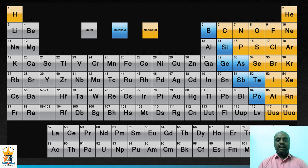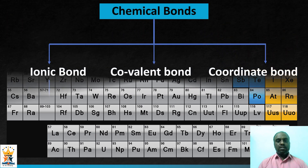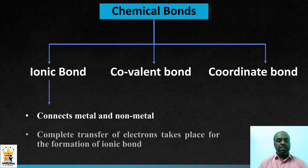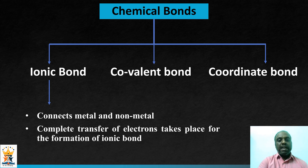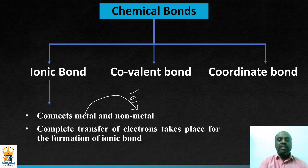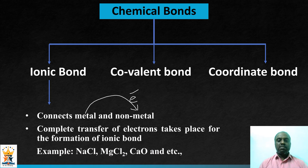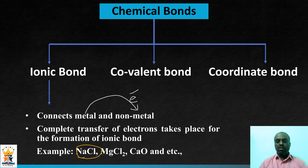Ionic bond connects metal to the non-metal. During the formation of ionic bond, the metal atom loses electrons and the non-metal atom gains electrons — complete electron transfer takes place. Some typical examples of ionic compounds are sodium chloride, magnesium chloride, calcium oxide, and so on. In this video, we are going to discuss about the formation and structure of sodium chloride.